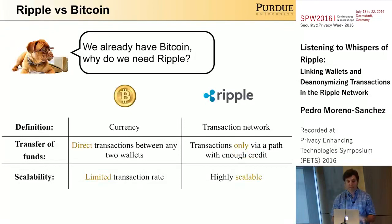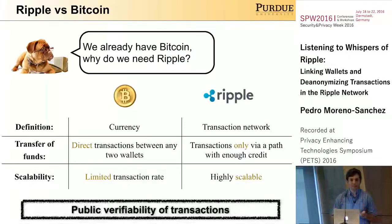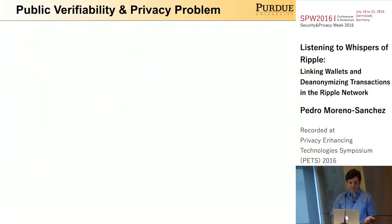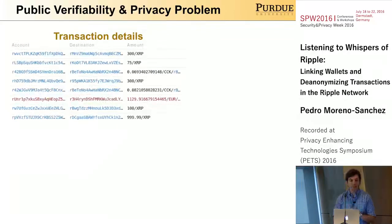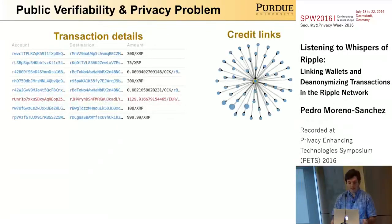Nevertheless, both systems have a common point: transactions are publicly verified. In the case of Ripple, this public visibility is enabled by the fact that all transactions are public, and all the credit links between any two users are also public. In Ripple terms, these two pieces of information are called the Ripple ledger.